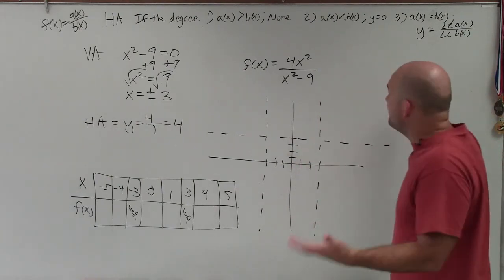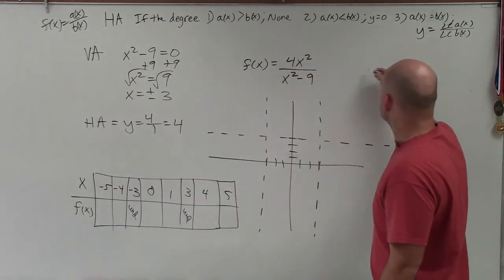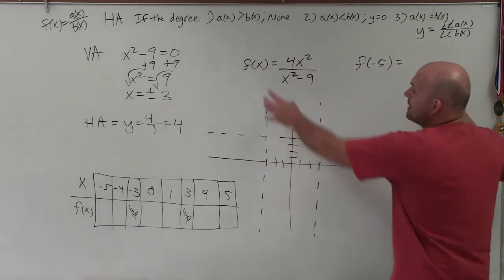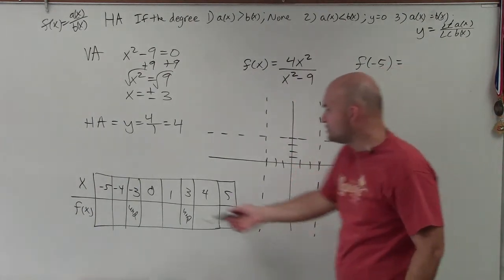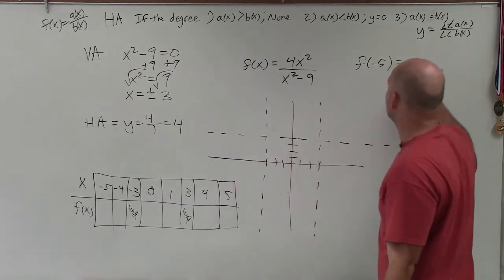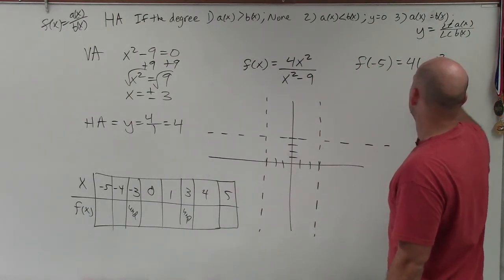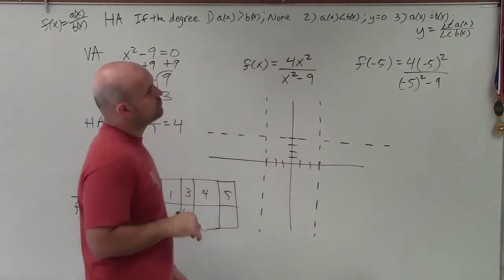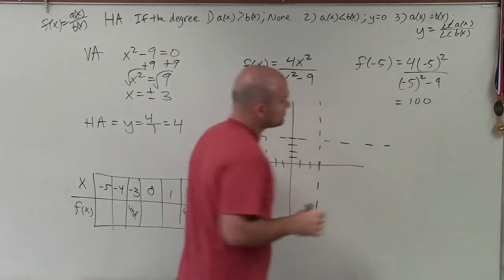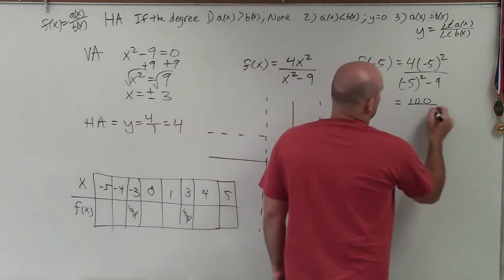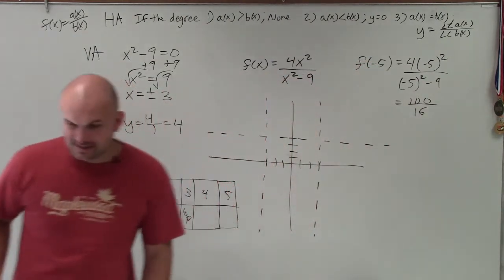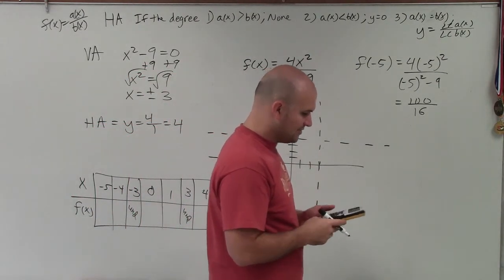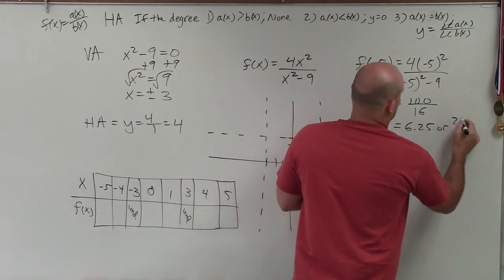Now, you can plug them into your calculator. But basically, what you're doing is you're evaluating for each one of these points. So let's do negative 5. So I'm going to start doing these mostly in my head. Now, notice, when I plug in negative 5, that's the same thing as positive 5, because I'm squaring both of them. So once I do negative 5 and negative 4, I have the answers for 5 and 4 as well. So negative 5 is 4 times negative 5 squared divided by negative 5 squared minus 9. So negative 5 squared is 25. 4 times 25 equals 100. And then that's 25 minus 9, which is going to be 16. Now, 100 divided by 16, I don't know what that is. So I'll just do 100 divided by 16 is 6.25 or 25 over 4.